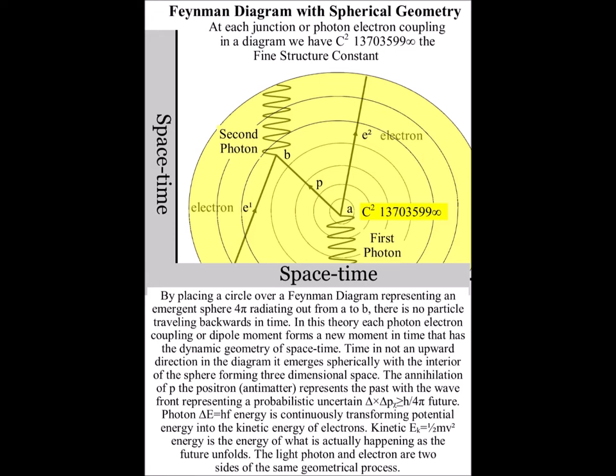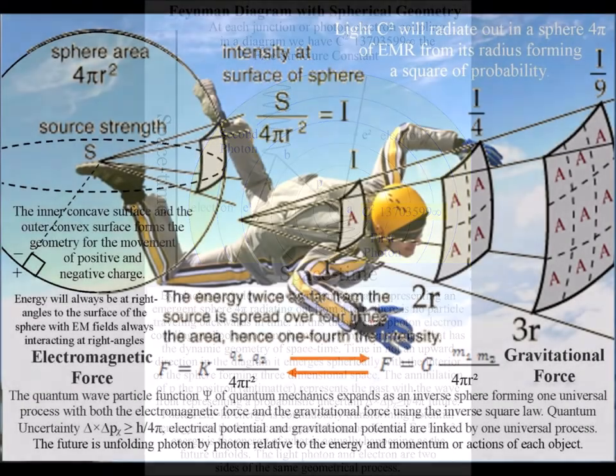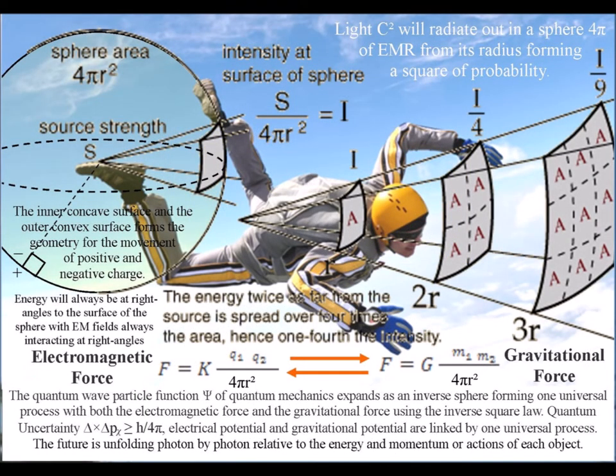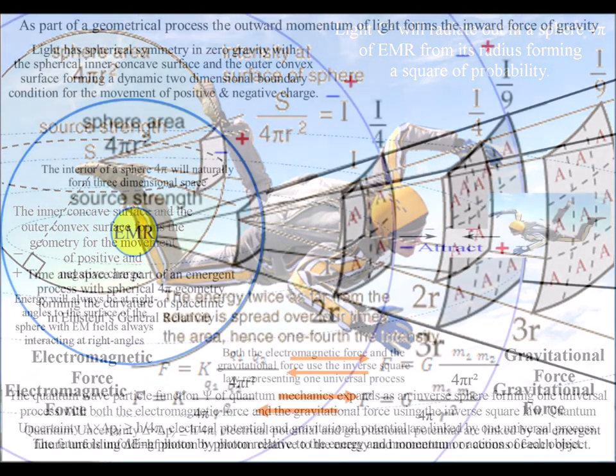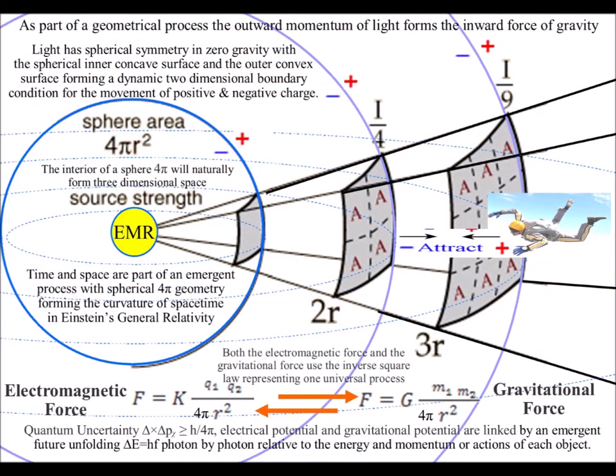This dynamic spherical geometry also forms the potential for the inverse square law of electromagnetic and gravitational fields. The equations are identical and we even have 4π in each equation representing spherical geometry.